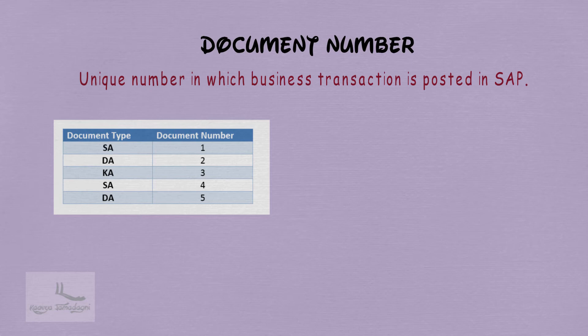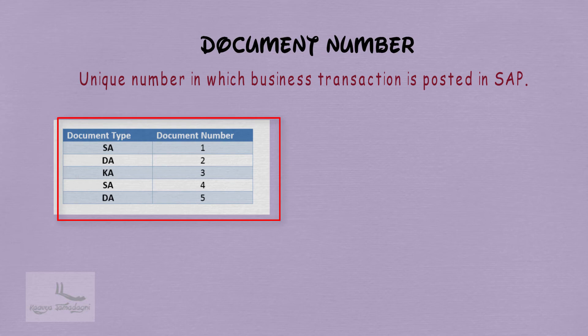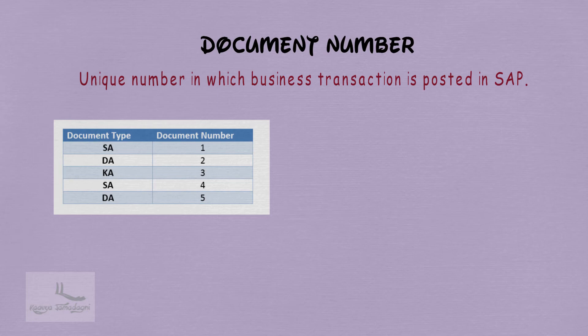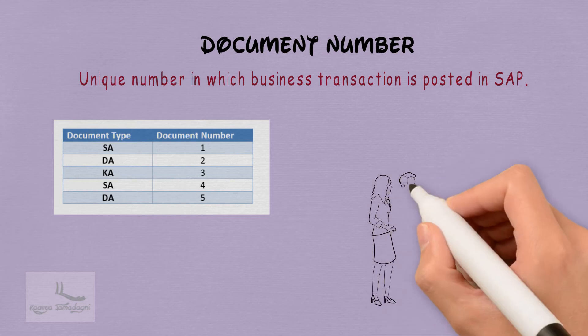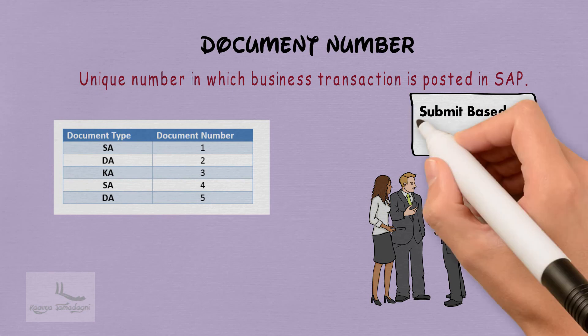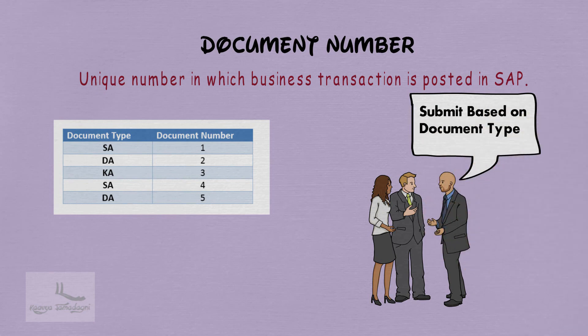The business has created five documents: Document Type SA with number 1, DA with number 2, KA with number 3, SA again with number 4, and DA with number 5. At the end of the financial year, the auditor requests documents of each document type separately for final computing — and identifying them this way is not at all easy.